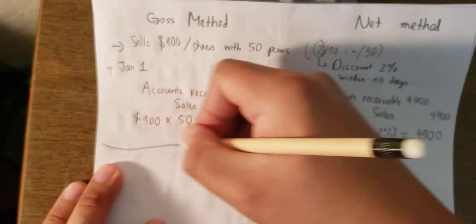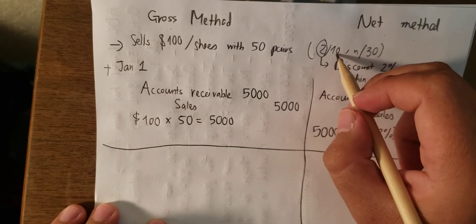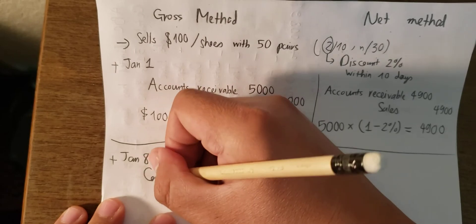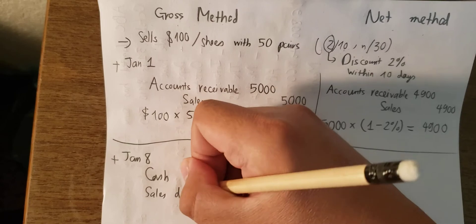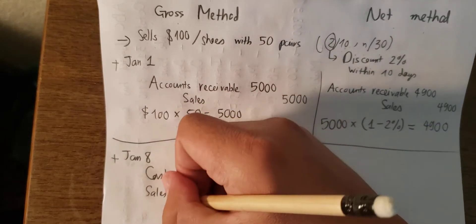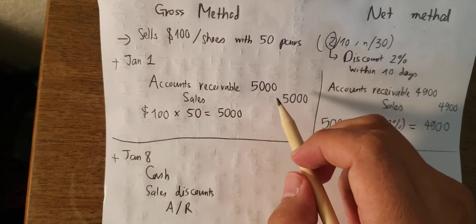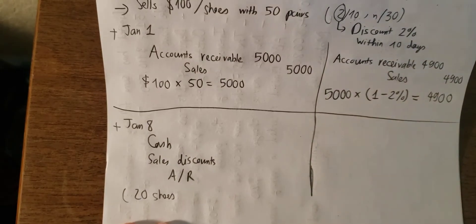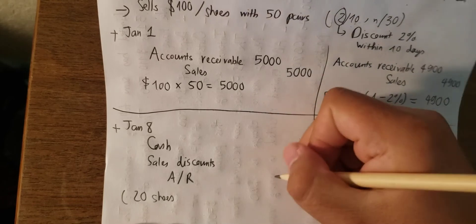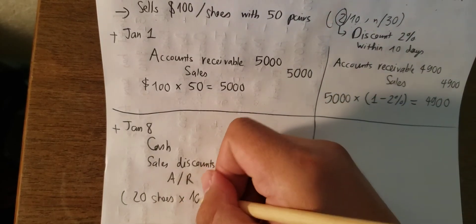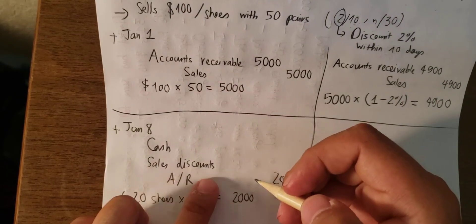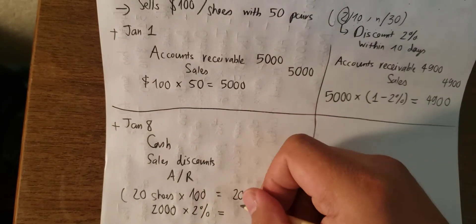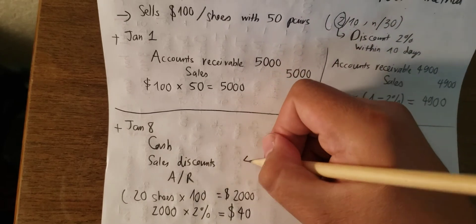Next, if the customer purchases within 10 days — let's say January 15th — we record cash, sales discount, and accounts receivable. For example, if the customer purchases 22 pairs: $100 multiplied by 22 is $2,200. However, they have a sales discount, so we multiply $2,200 by 2% to find the discount, which is $44.